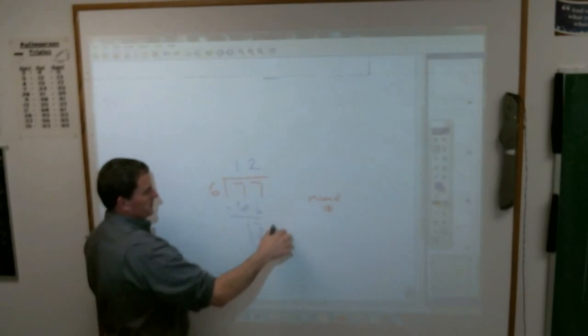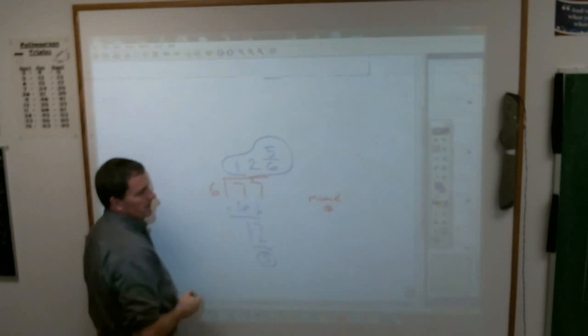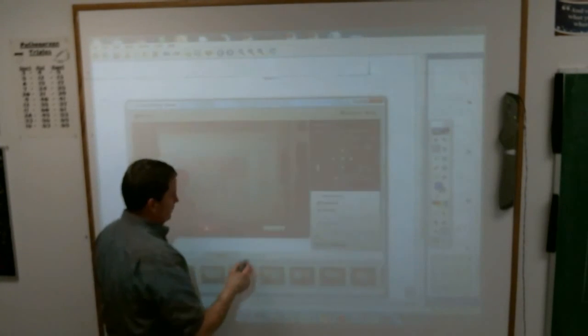I said to write my answers as a mixed number, so I take this 5. It goes on the top. And the 6 goes on the bottom. 12 and 5 sixths. Somebody pretty good?